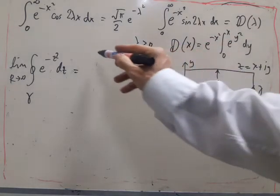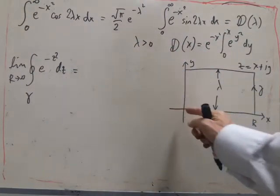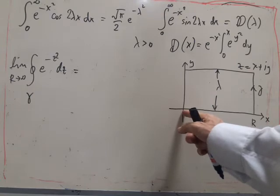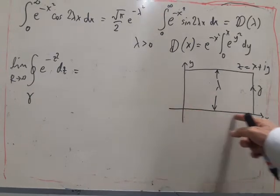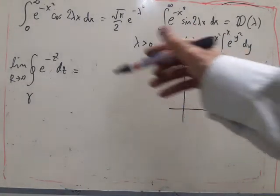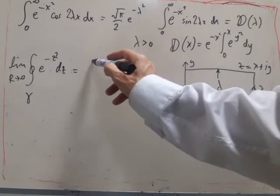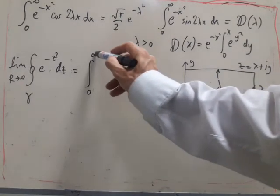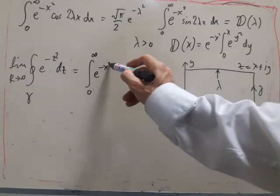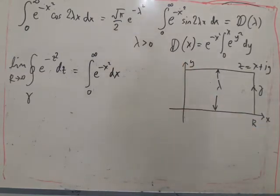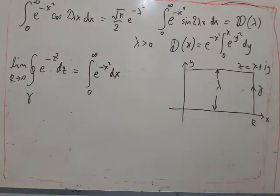So the first integral is going to be from zero. It's going to be along here z is equal to x. So it's just e to the minus x squared from zero to infinity. Now, this is a well-known integral, which has a value of root pi by 2. This should be in your formula sheets.